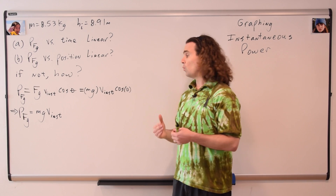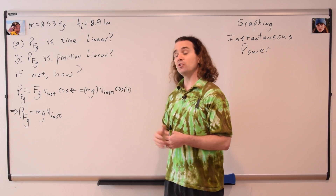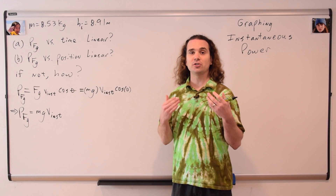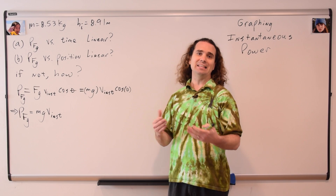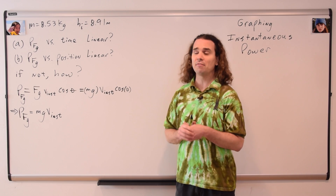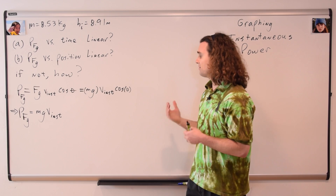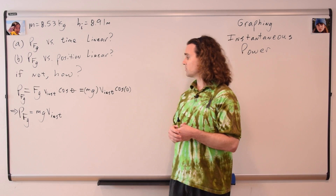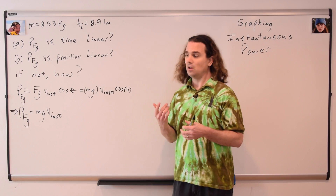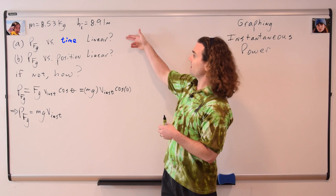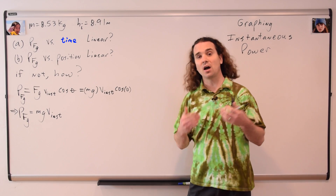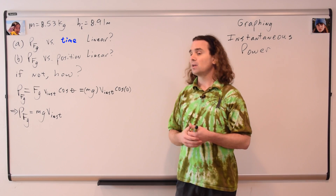The equation for instantaneous power is mass times the acceleration due to gravity times the instantaneous velocity, which means we need an expression describing the instantaneous velocity of the pumpkin in terms of — for part A — time. Bo, could you please do that?